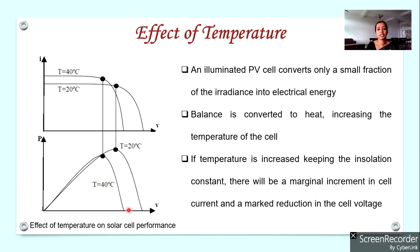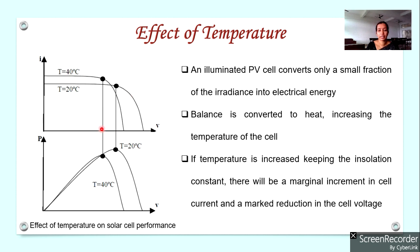Now let us see the effects of temperature on performance. Consider an illuminated PV cell and assume that its insolation remains constant. The conversion efficiency of a PV cell is very small — it converts only a small fraction of the irradiance into electrical energy. The remaining solar energy is converted to heat, which means the temperature of the solar cell increases.